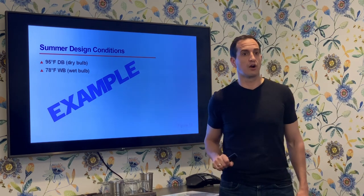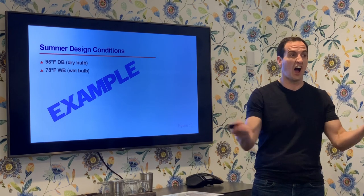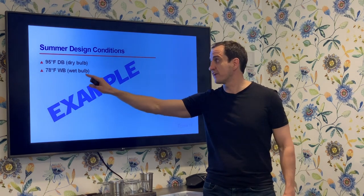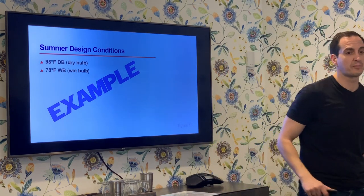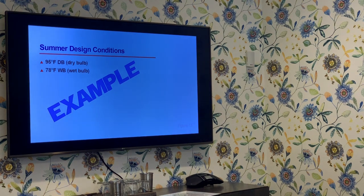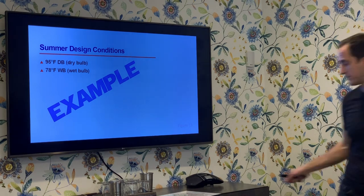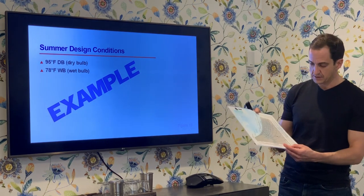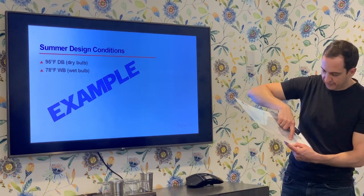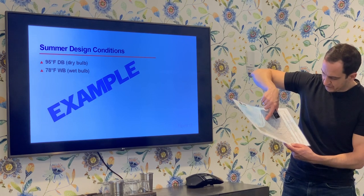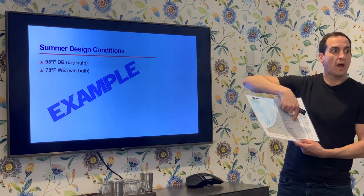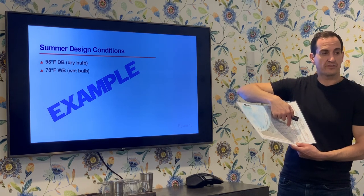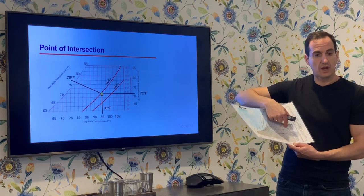Let's say we've got our dry bulb and wet bulb thermometers and we go outside on a hot, humid day in Atlanta. We measure 95°F dry bulb and 78°F wet bulb. Take a moment to look at your psychrometric charts. On the x-axis find 95°F between 90 and 100, then look at the wet bulb lines and take the 95°F line up until it crosses the 78°F wet bulb line. Put a dot there — that's where we are.